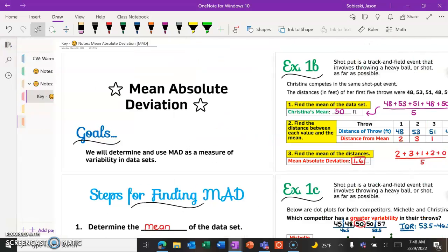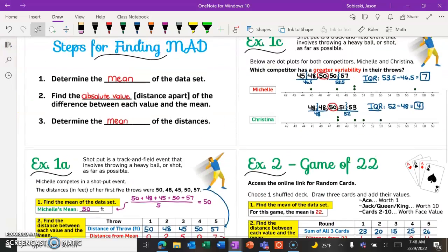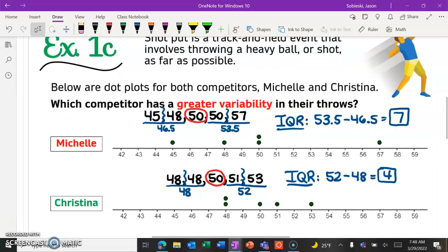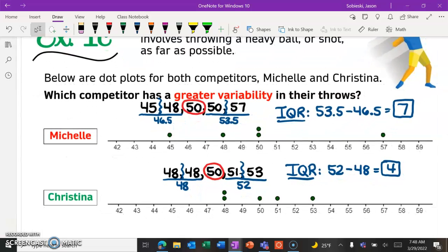I'm just going to quickly pull up our answer key here so that you can see. But here's what it would look like. Again, I always like to make the list of numbers instead of using the dots. Find your median. Like for Michelle, it was 50.